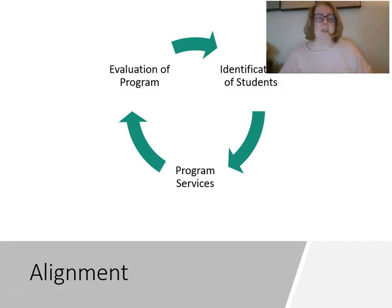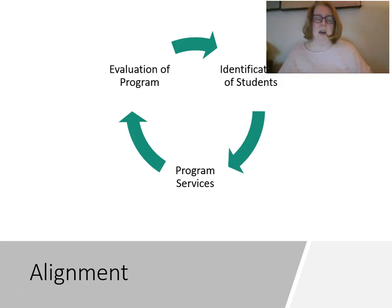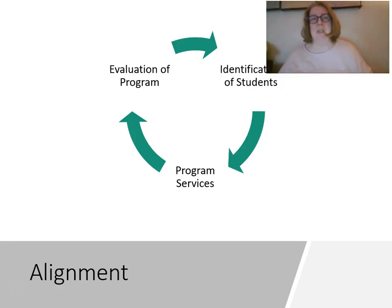Another important concept is alignment. When assessing students for gifted programs, we need alignment between how we identify students, what our program does, and how we evaluate that program. In Florida, we identify students based on an IQ score, but that doesn't really help us plan a program. An IQ score doesn't help us know what a student is good at — it just tells us they might learn faster.